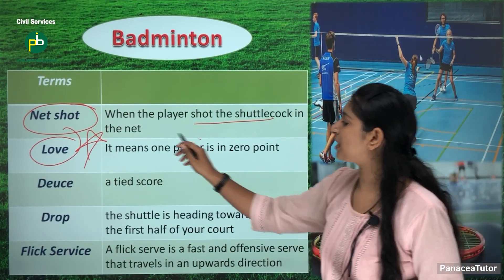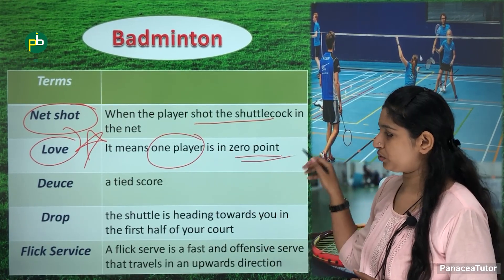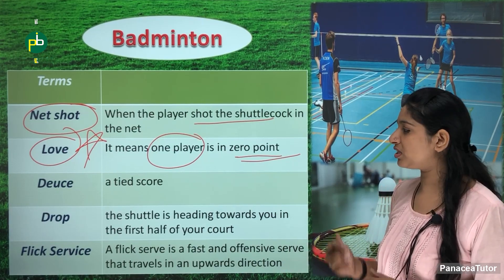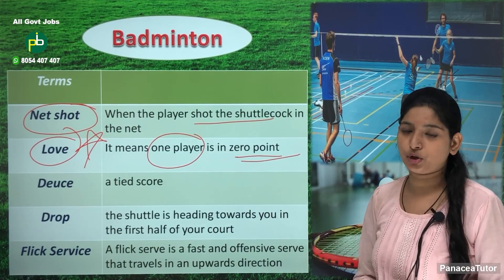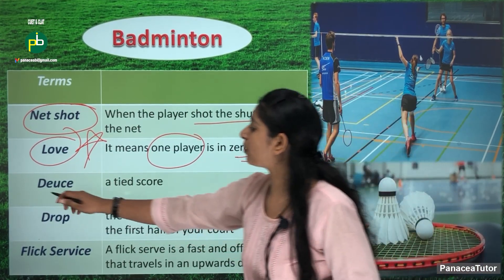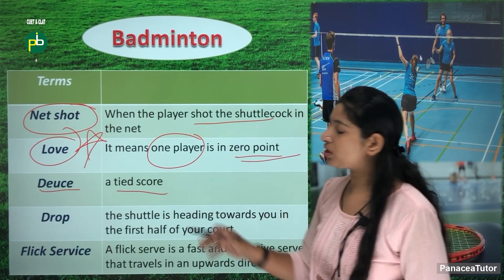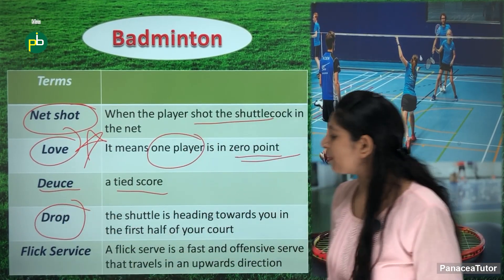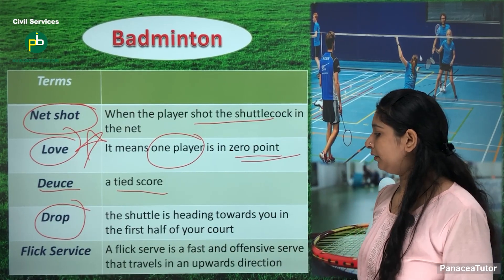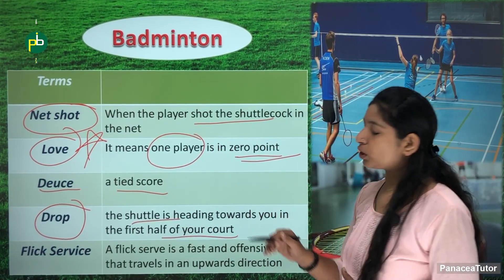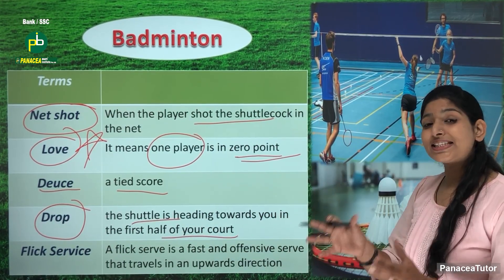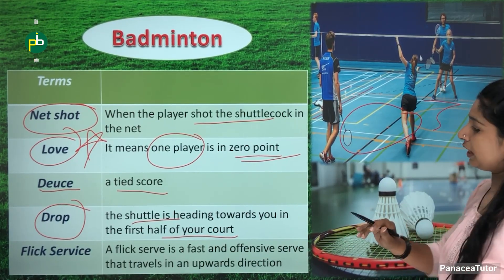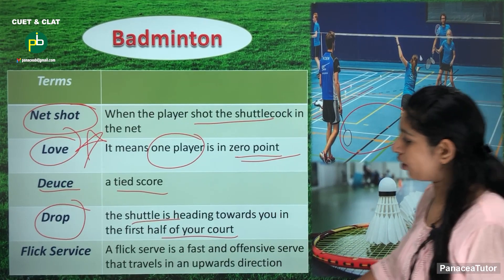What does love mean? When a particular player has 0 points, we say love. Next one is deuce — deuce is a tie score where both teams have the same score. Next is drop — when the shuttle is hit in the first half of the court, or when a player hits the shuttle on the side and it drops, we call it the situation of drop.